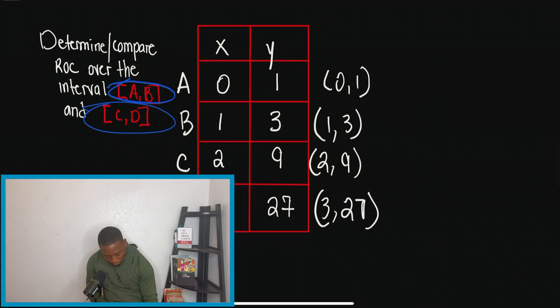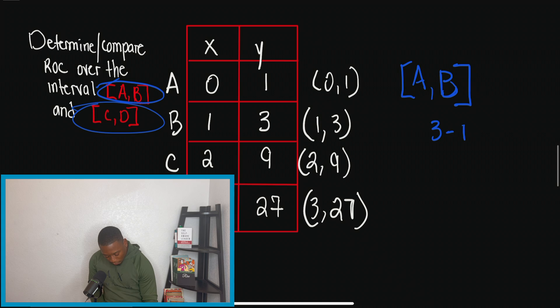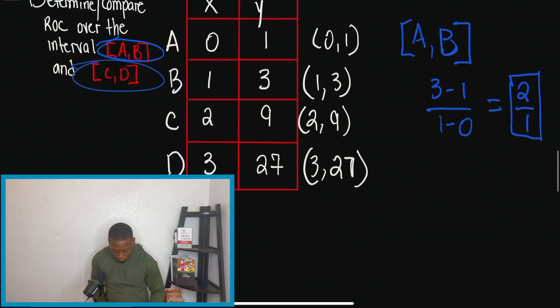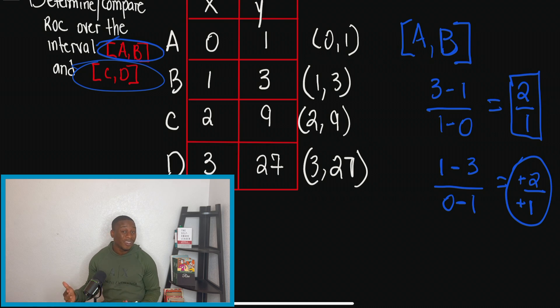So once we set up for the interval, we're going to switch colors so this pops out because I know there's a lot going on. Once we set up interval A, B, we're going to have three minus one all over one minus zero. So basically our average rate of change is just two from interval A over B. And also understand that the order, it does not matter. Even if I did this the other way, one minus three over zero minus one, we would have gotten negative two over negative one. And we know that a negative divided by a negative is positive.